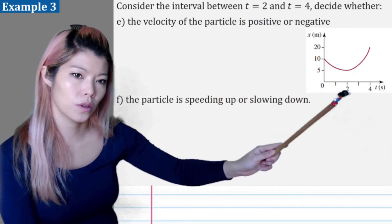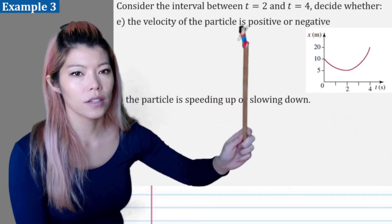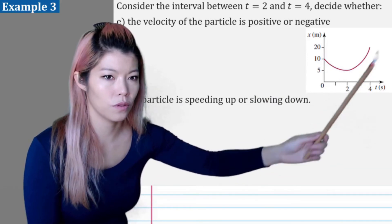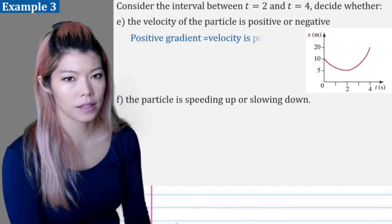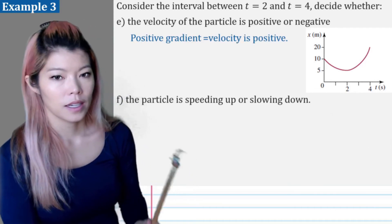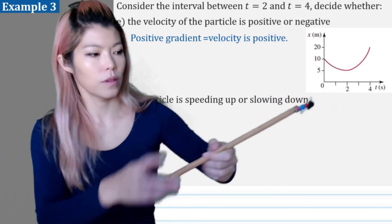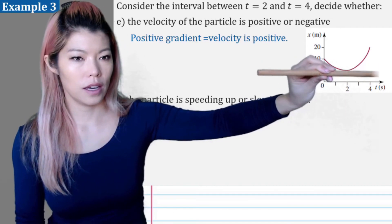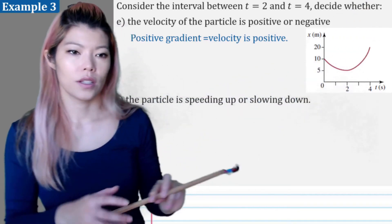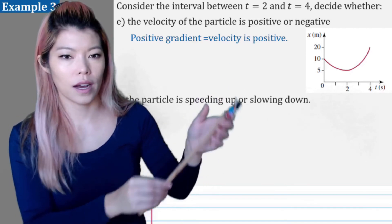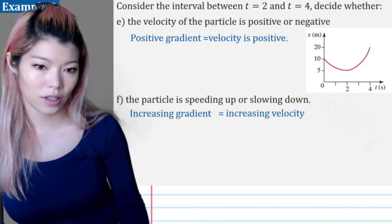Consider between two and four seconds: we can see the graph is going up, so it has a positive gradient, meaning the velocity is positive. Is the particle speeding up or slowing down? At two seconds the gradient is zero, then it becomes more positive at three seconds and very steep at four seconds — so the velocity is going from zero to very fast. The gradient is increasing, which means increasing velocity, or what we call speeding up.